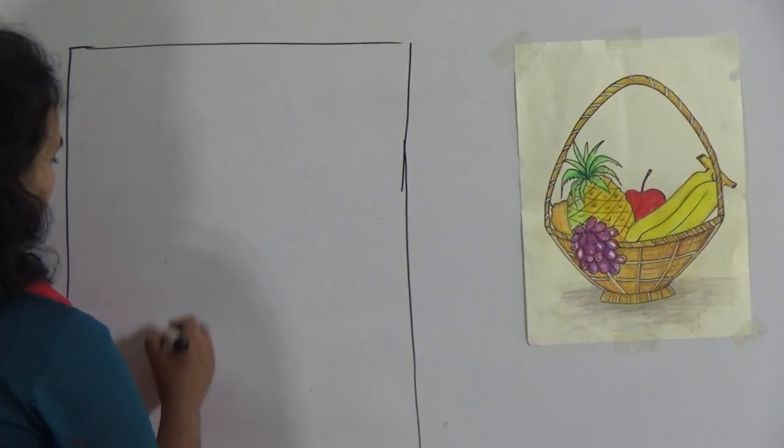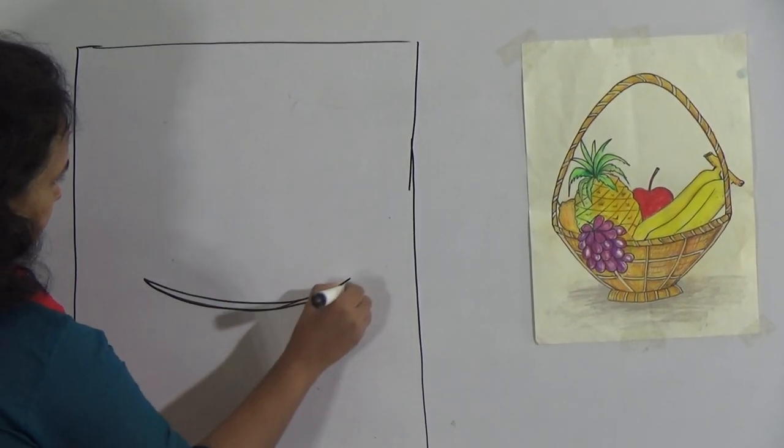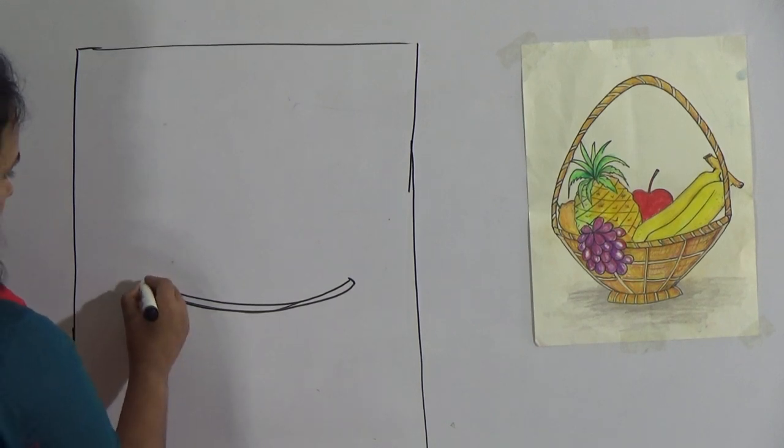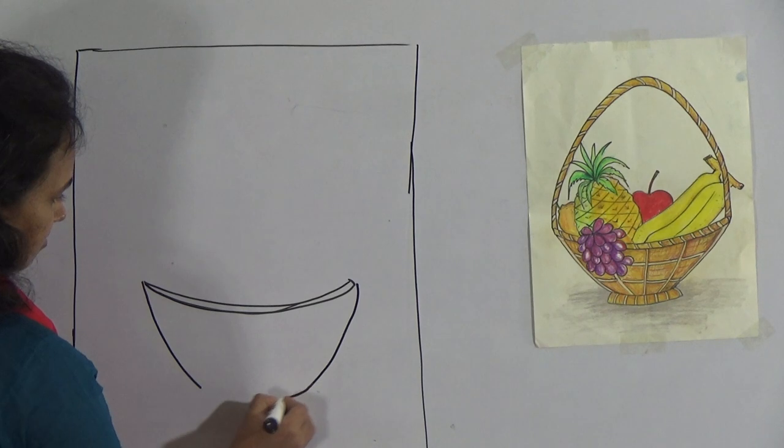First you will draw a curve line like this. Then draw the basket.